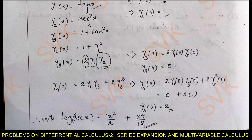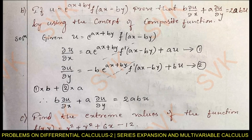Moving on to the next question: if u = e^(ax+by)·f(ax − by), show that b·(∂u/∂x) + a·(∂u/∂y) = 2abu, using the concept of composite functions.